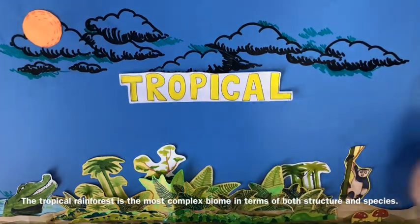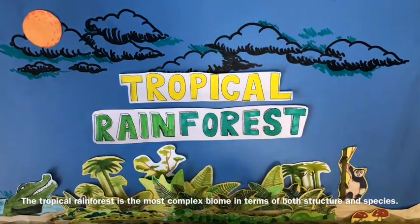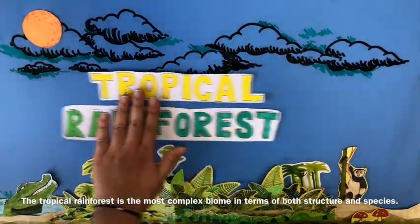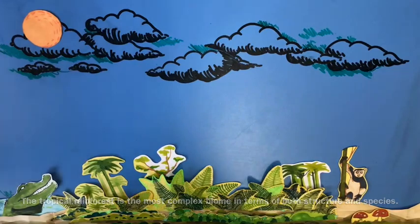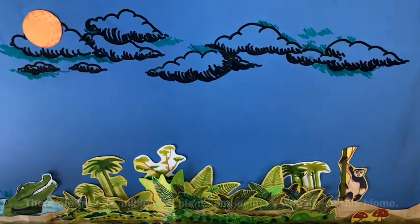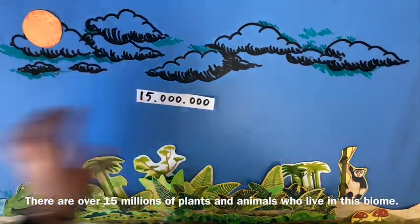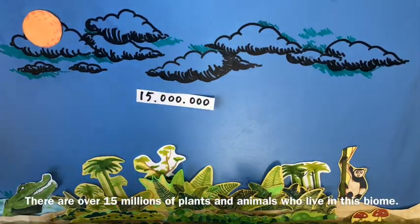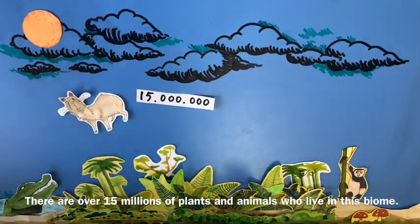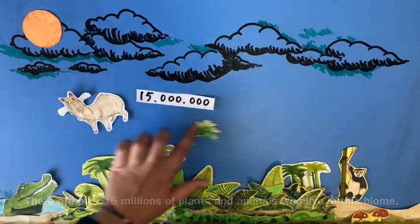Tropical rainforest is the most complex biome in terms of both structure and species. There are over 50 million plants and animals who live in this biome.